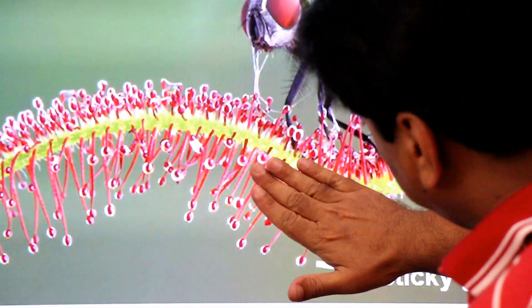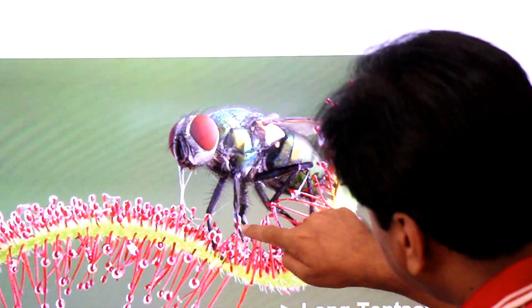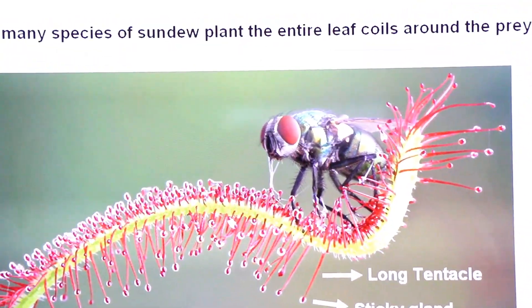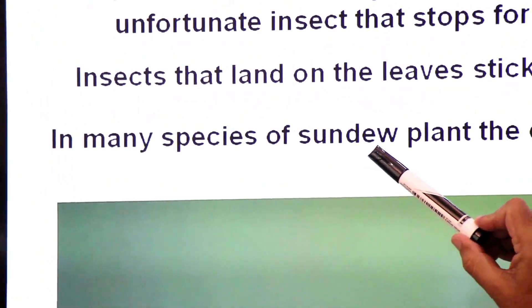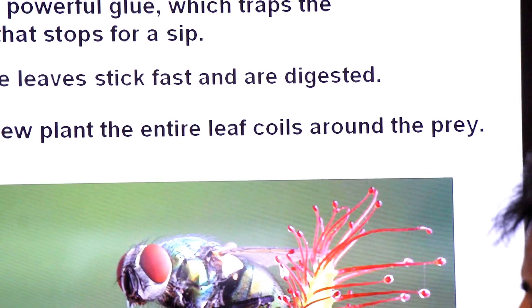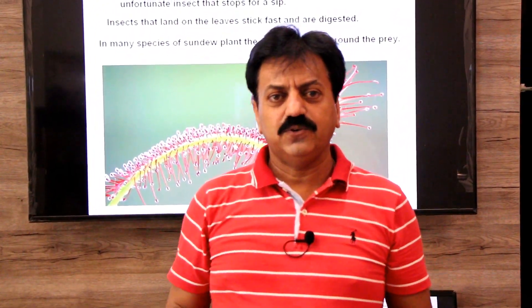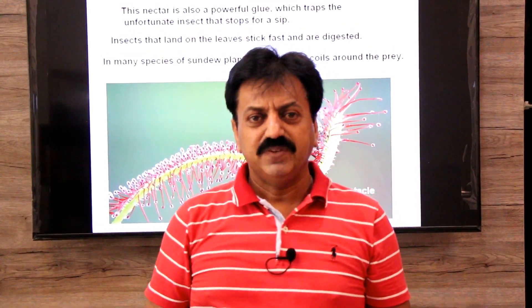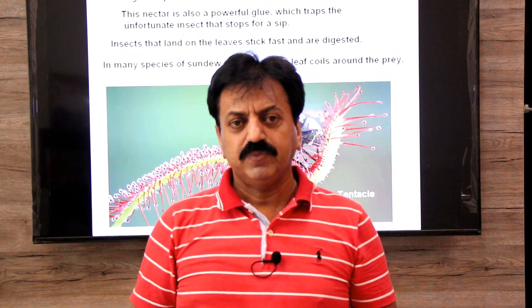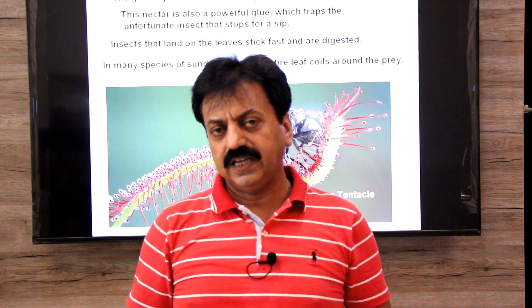In many species of sundew plants, the entire leaf blade coils or rolls around the prey — the insect. So sundew plants lure insects with sticky juice and nectar, and the insects' legs get trapped by the sticky juice. Now we move on to another insectivorous plant.